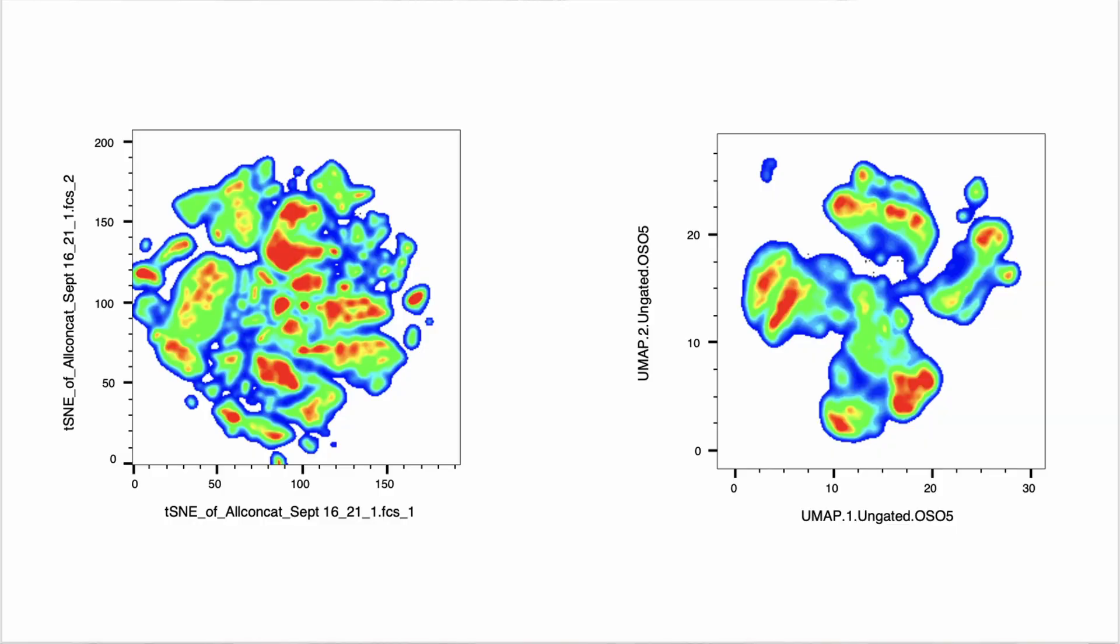So after that little cytometrist rant, let's talk about high dimensional data analysis plots. So the t-SNEs and the UMAPs. As people are starting to get into more and more colors in their flow cytometry experiments, you're starting to see these come up more and more often. So these will look something like this, a blobby pattern of random areas that your brain is meant to somehow interpret.